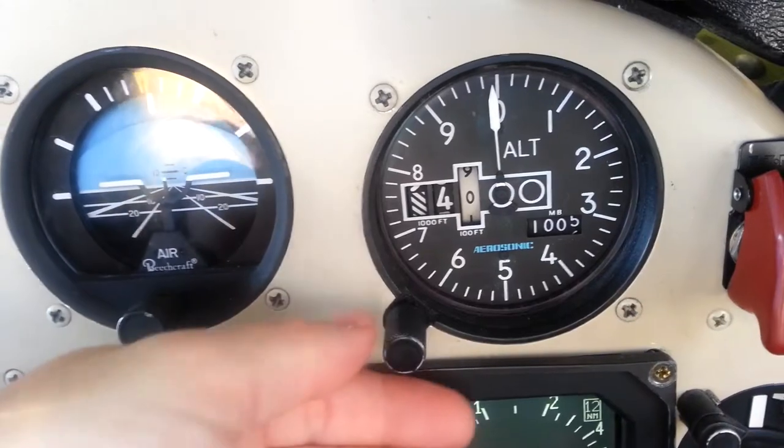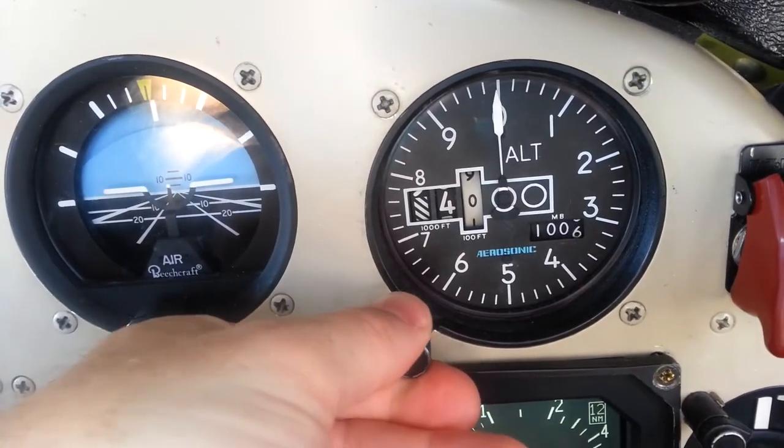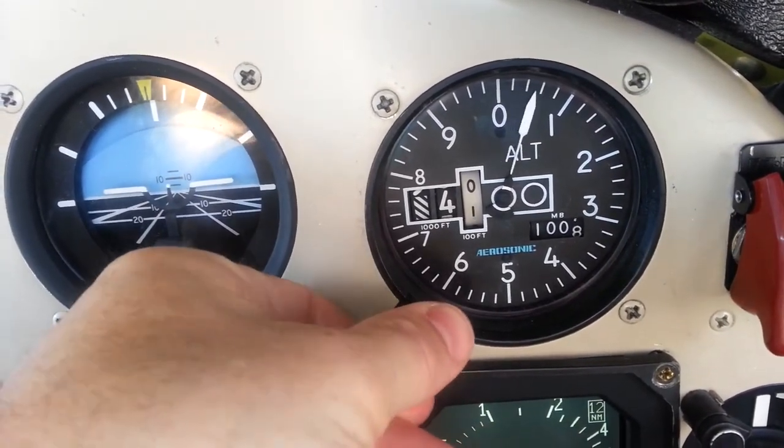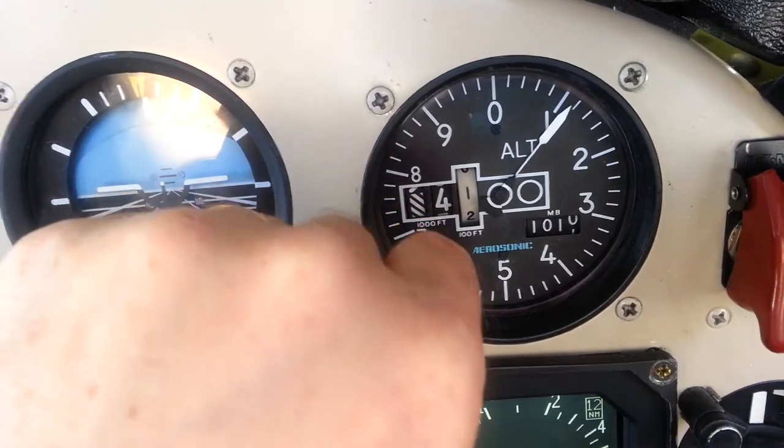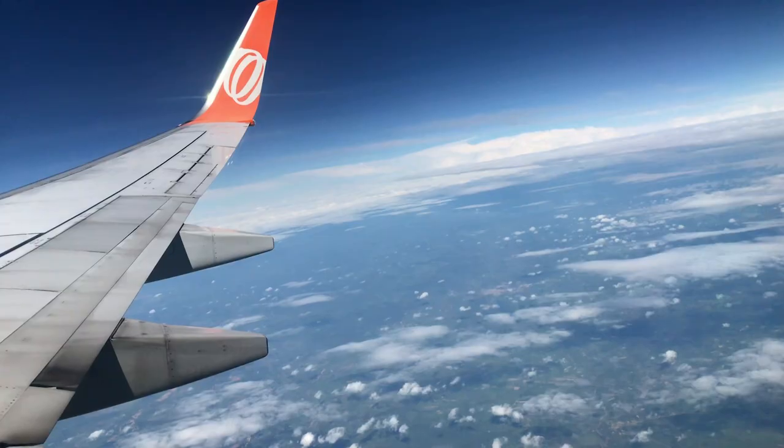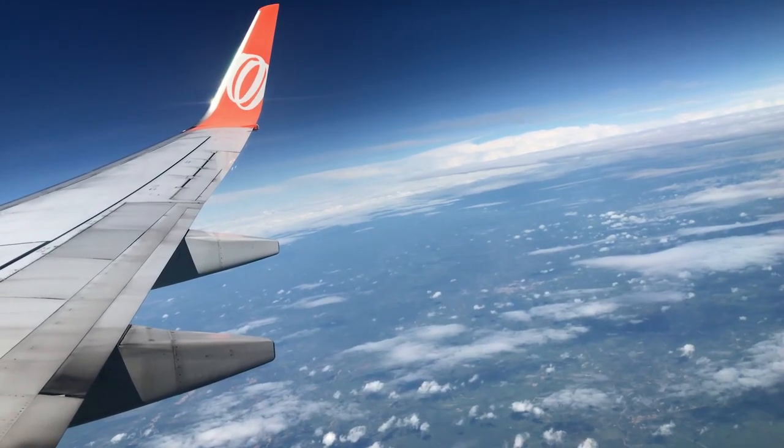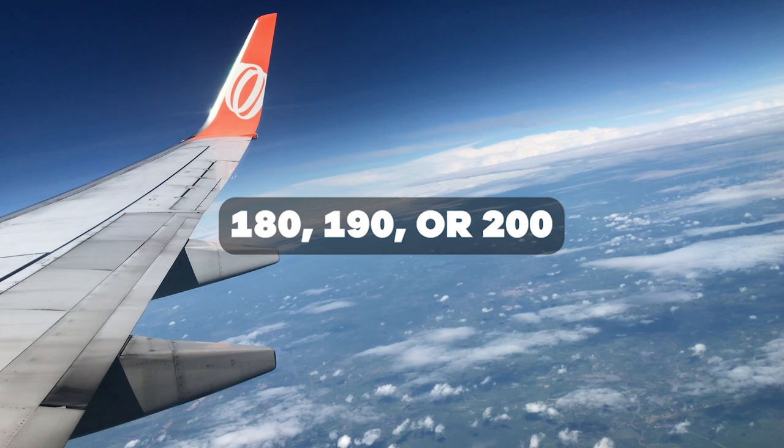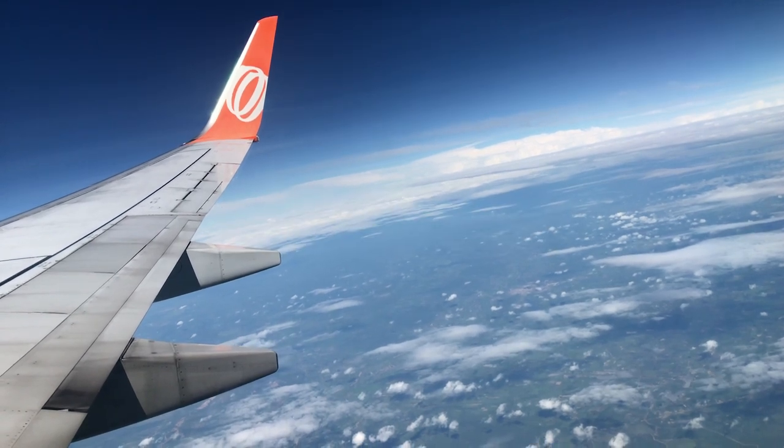In some countries, both the transition altitude and transition levels are fixed numbers, regardless of the actual air pressure. In the U.S. and Canada, the transition altitude is fixed at 18,000 feet, and the lowest usable flight level is either 180, 190, or 200, based on the current pressure setting.